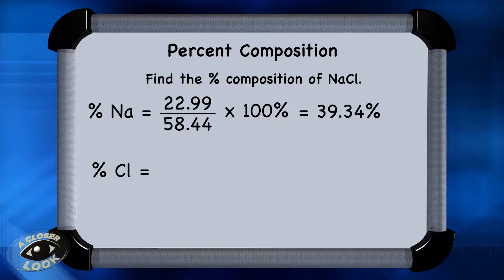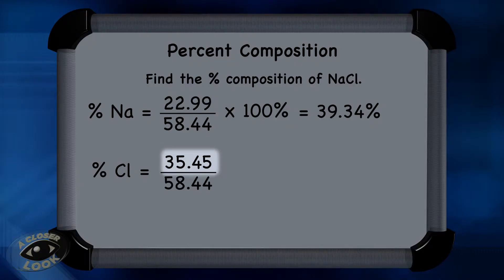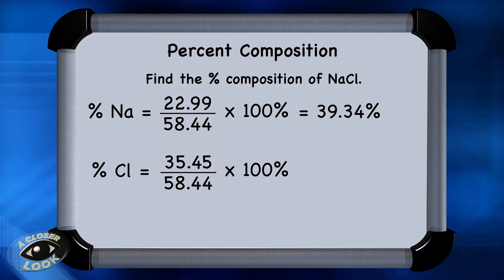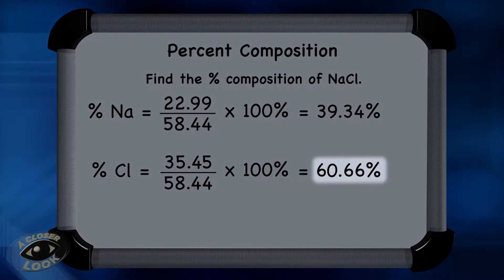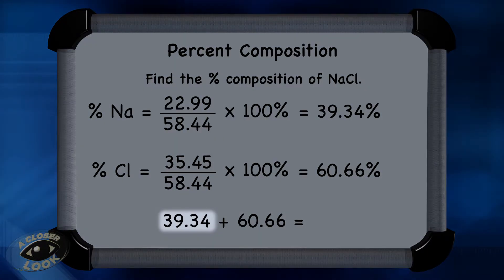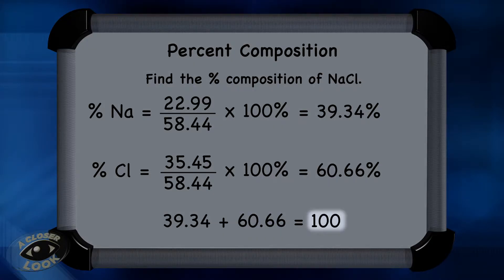Do the same thing for chlorine to figure out its mass percent. Put the mass of chlorine, which is 35.45, over 58.44 — the molar mass of the compound — then multiply that times 100 to get the mass percent of chlorine, which is 60.66%. When you do percent composition problems, all of the percentages should add up to 100. So let's check: 39.34 plus 60.66 does indeed add up to 100.